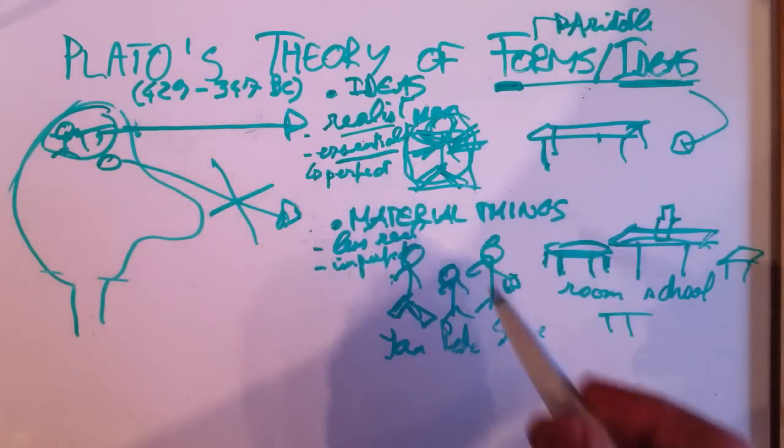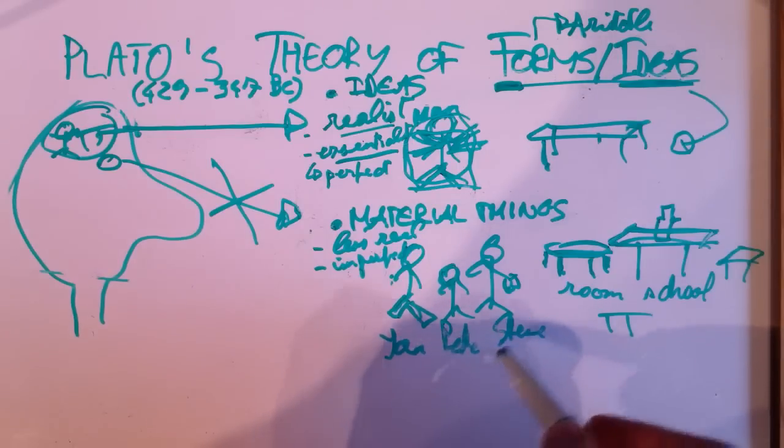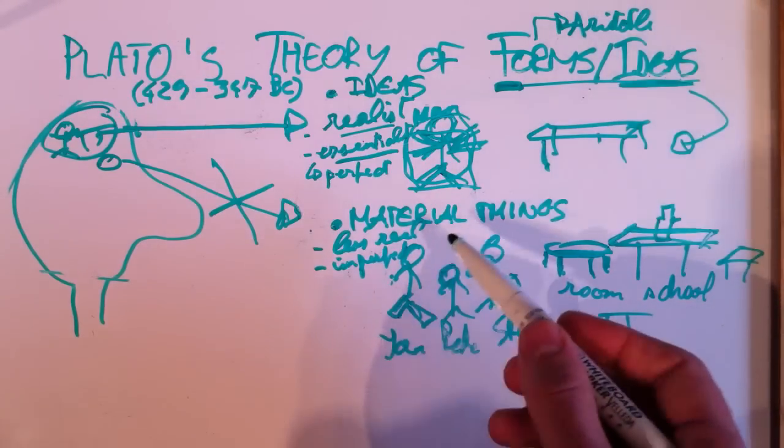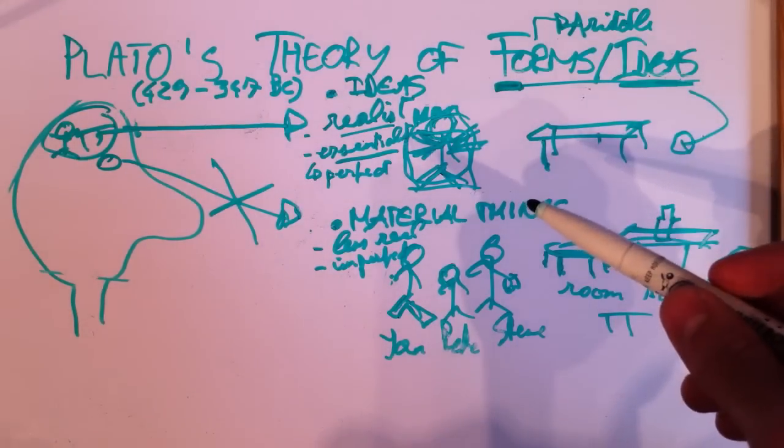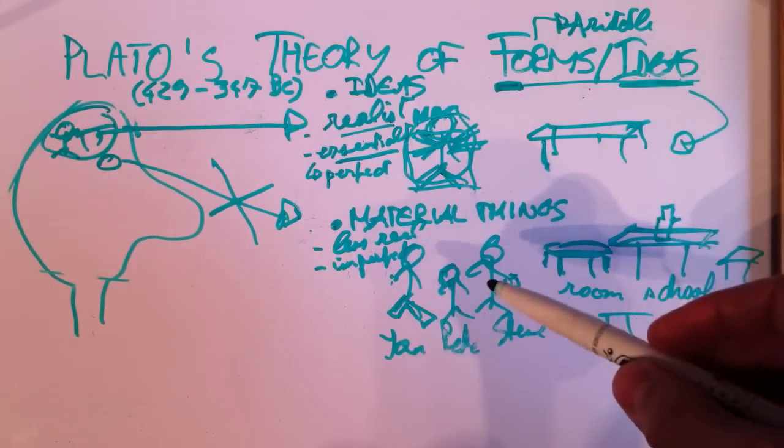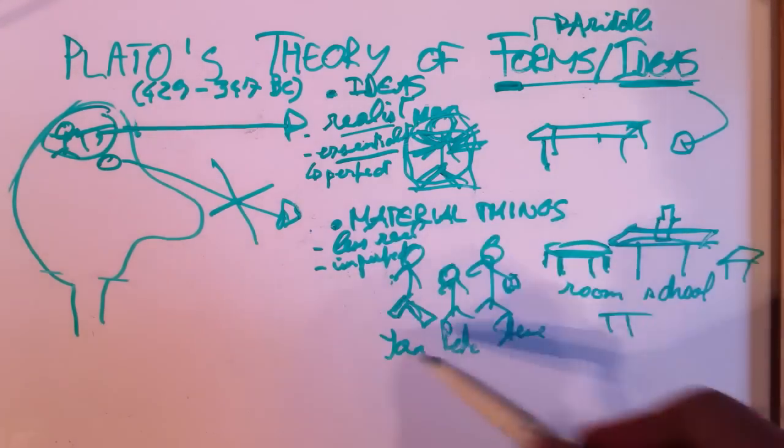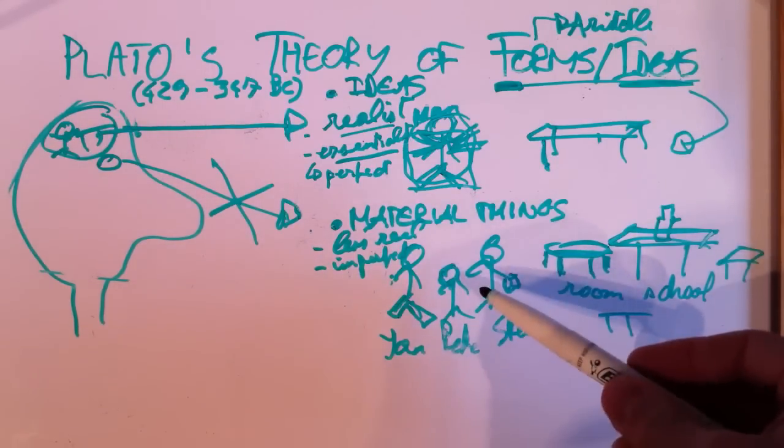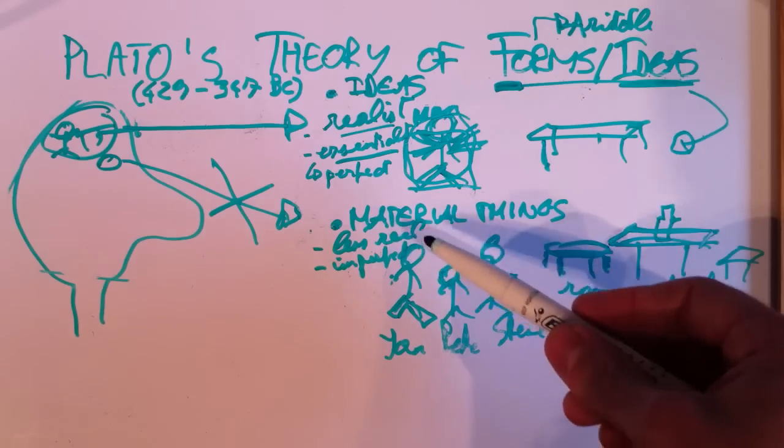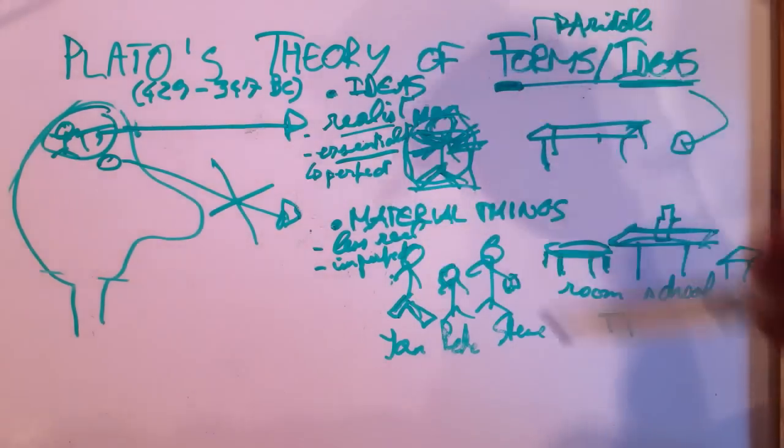That is strange to say that Jan, Pete and Steve are, in a sense, less real than the idea of man in general. We tend to think that it's the other way around. That this stuff, these material things, which we can really observe, that is reality.